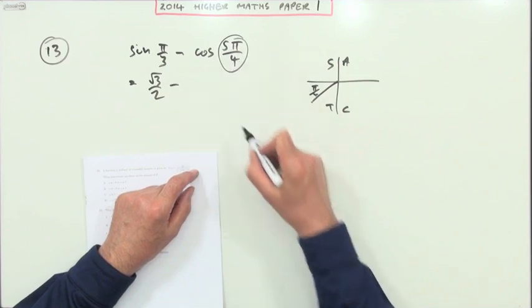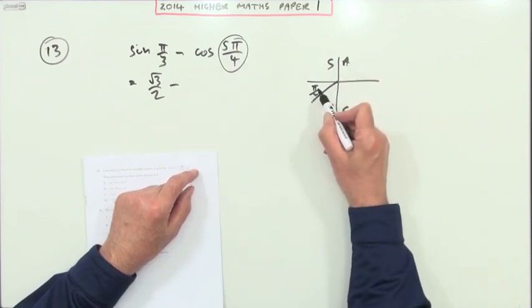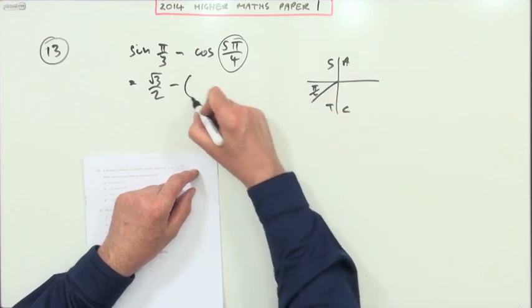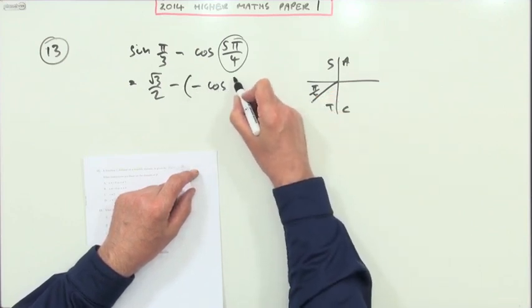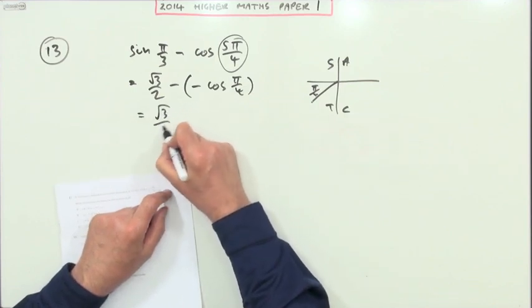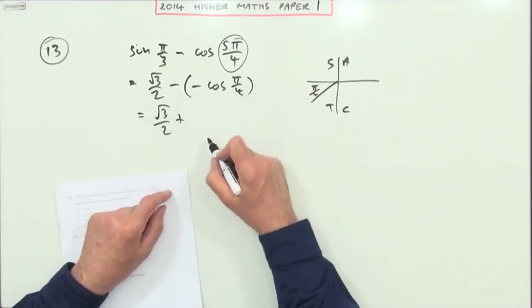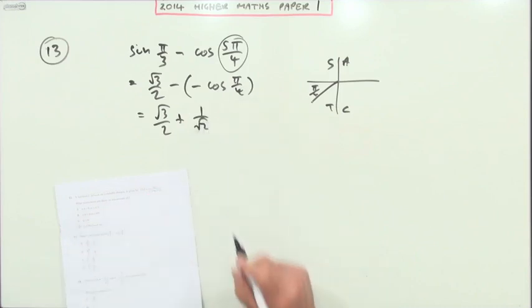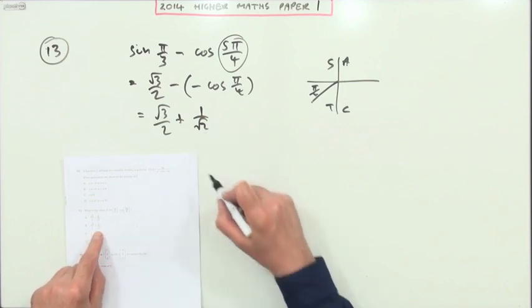So cos 5π upon 4 is equivalent to cos π upon 4, but it's negative if it ventures into this quadrant. So it's negative cos π upon 4. So that's root 3 upon 2 plus, and cos π upon 4, the sine and cosine are the same for 45, they're both 1 over root 2. So it's root 3 upon 2 plus 1 upon root 2.